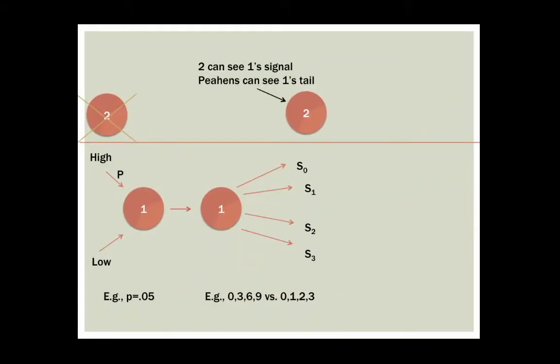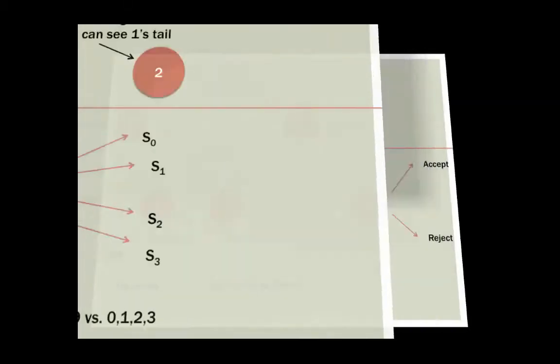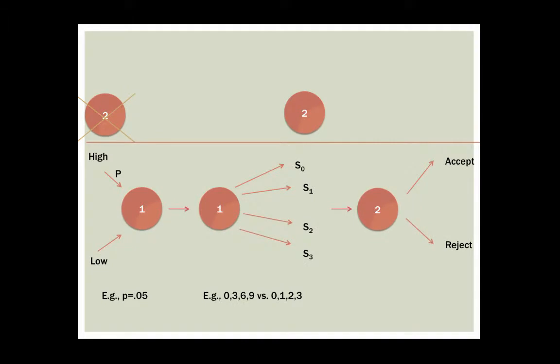Player 2 can see Player 1's signal — the peahen can see the peacock's tail. Finally, Player 2 can decide whether or not she would like to accept or reject. In the case of the peahen, she decides whether or not she would like to mate with Player 1.